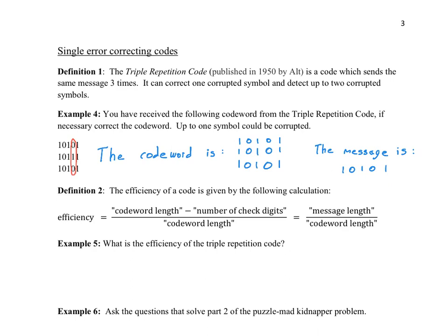Apparently the triple repetition code was a national secret at one point. People were very nervous about all of the information being transmitted during World War Two, and the knowledge of how to correct and detect these types of errors through digital signals was very new information. I felt kind of humored by the idea that just taking something and repeating it three times was this national secret that had to be covered up by Alt until they were actually able to publish it.